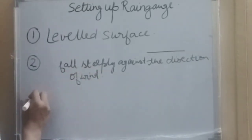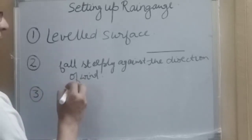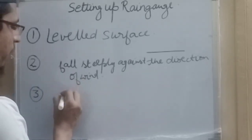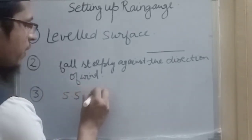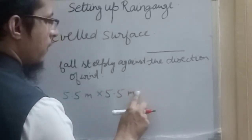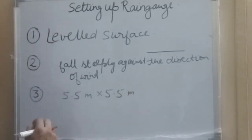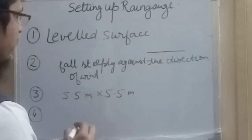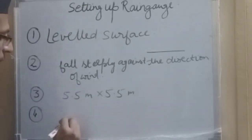Then thirdly, there should be enough open space, at least 5.5 meter by 5.5 meter open space where we place the rain gauge. And the next thing is that the distance of the nearest object from the rain gauge should be at least 30 meter.